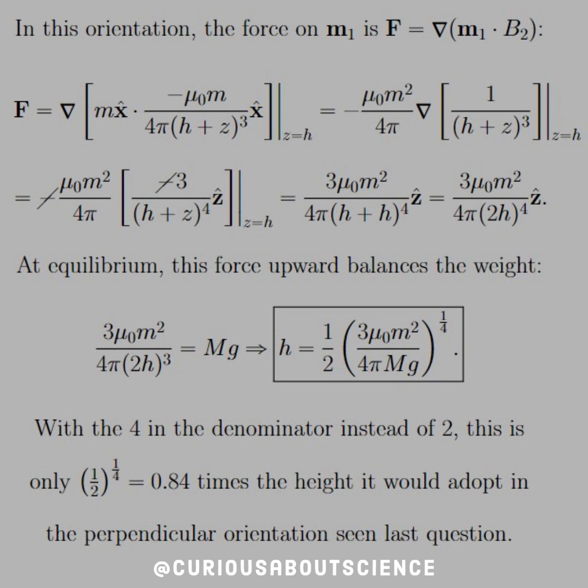Now in this orientation, the force on m1 is F equals the del operator, or the gradient of m1·B2, where B2 is the field from m2. Go ahead and chug all that stuff along. We're just in the x direction because π/2 was determined. The dot product is pretty easy to deal with. You get negative μ_0 m^2 / 4π. This is happening at z equal to h, so that's why we end up with (h + z)^3 on the inside, but we cannot evaluate it until we take the gradient.